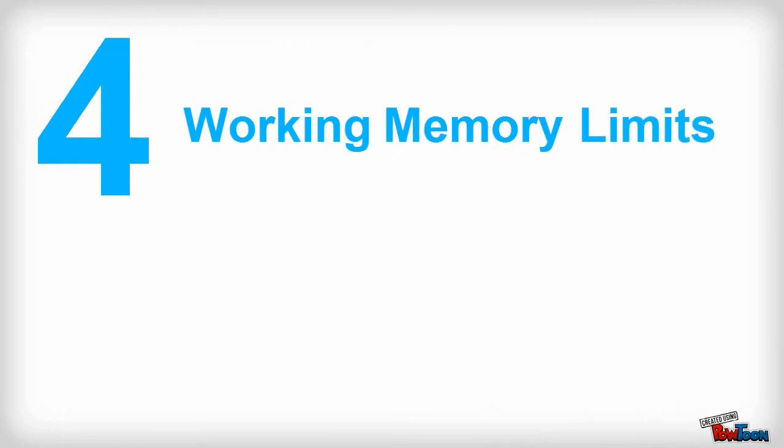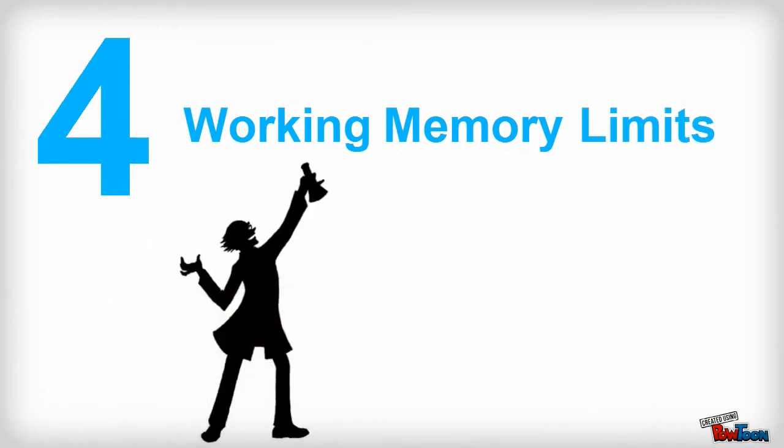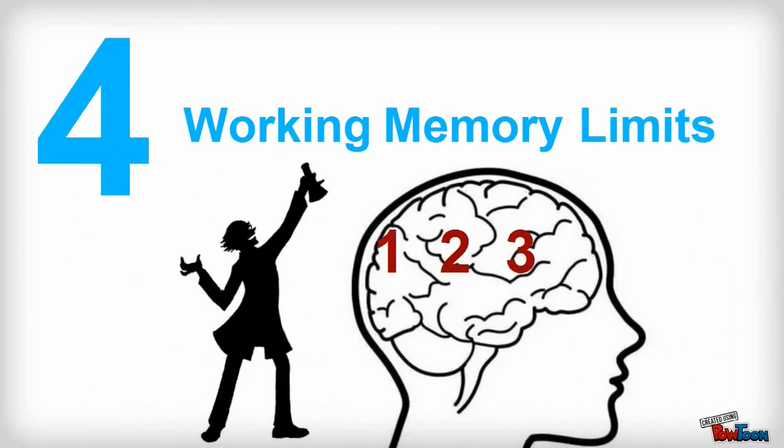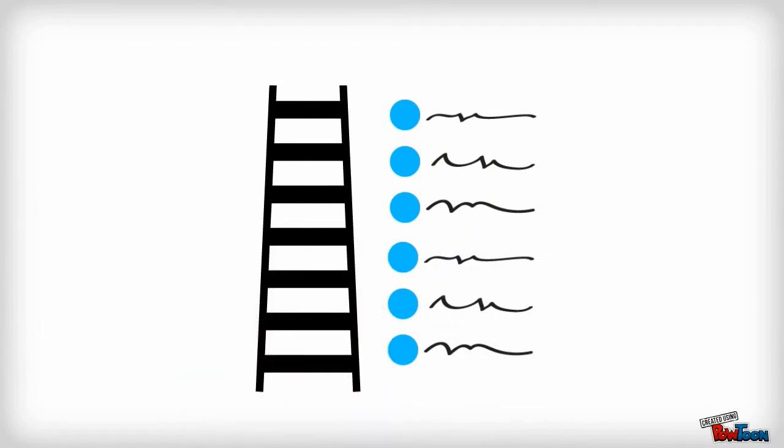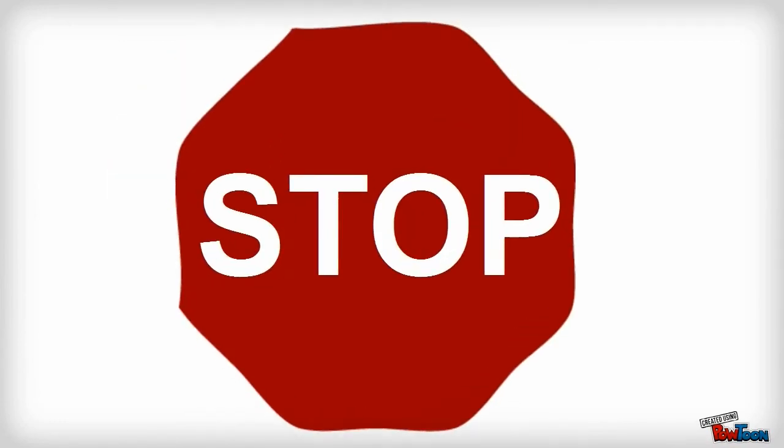Problem number four, working memory limits. Recent studies show that people only have a memory capacity of about four chunks of information at a time. Each and every bullet point is an extra step on a ladder you're forcing your audience to climb. So stop it.